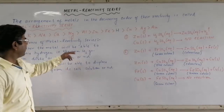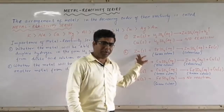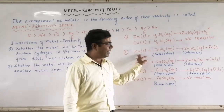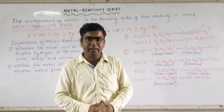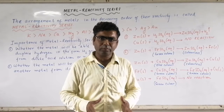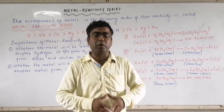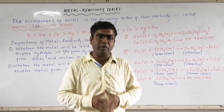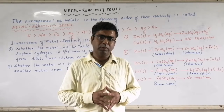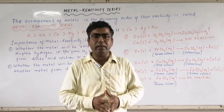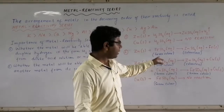Zinc is located to the left of iron in the reactivity series, so zinc is more reactive than iron. Being more electropositive, zinc will displace iron from iron sulfate. As a result, we obtain ZnSO₄ and iron is deposited at the bottom of the beaker as a blackish-brown precipitate. The color of the solution also changes — the green color converts to colorless, because zinc sulfate (white vitriol) is a white solid that gives a colorless solution. A color change indicates a chemical reaction has taken place.